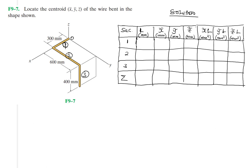I have section one, which is 300 millimeters in the x-axis. I have section two, which is 600 millimeters in the y-axis. And I have section three, which is 400 millimeters in the negative z-axis. So let's fill up this table and then begin working out.